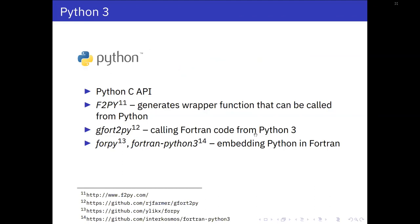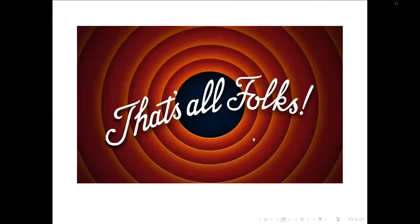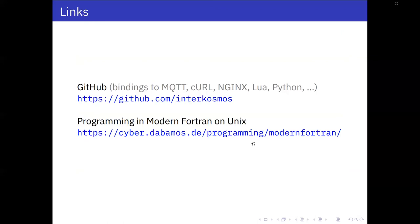If we do not want to or cannot use Lua, there's also Python, which has a C API. This evening there will also be a talk about F2Py, which generates wrapper functions that can be called from Python, and there are also libraries available to embed Python code in Fortran. On my GitHub repo you will find the interface bindings or many of the interface bindings I've talked about, and there's also an introduction I've written in the past about programming in modern Fortran.